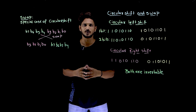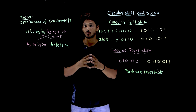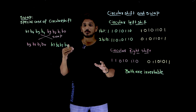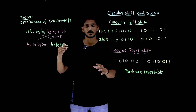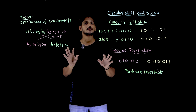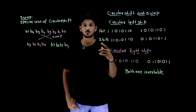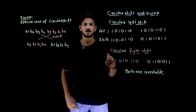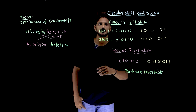Welcome to LearningMonkey, I am Raghu here. In this class we will discuss about circular shift and swap operation. These are very simple concepts to understand. In our previous classes we discussed a few components regarding modern block ciphers which is S-box, P-box, and XOR operation. Similarly, circular shift and swap operations are also used as components in our modern block cipher.